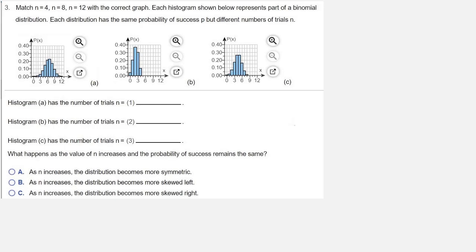Each histogram shown below represents part of a binomial distribution. Each distribution has the same probability of success p, but different numbers of trials n.